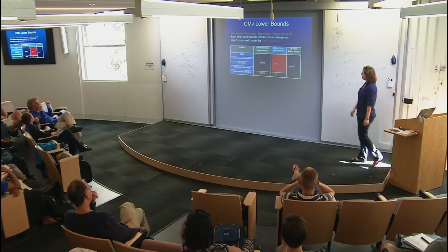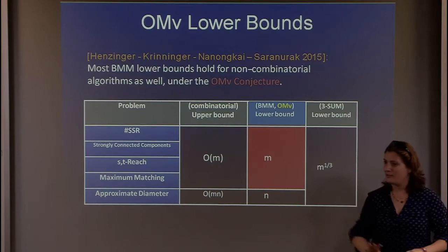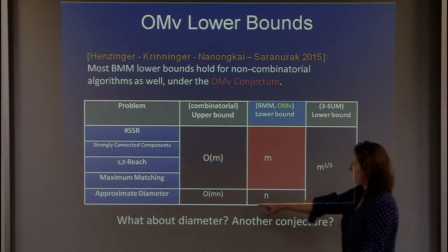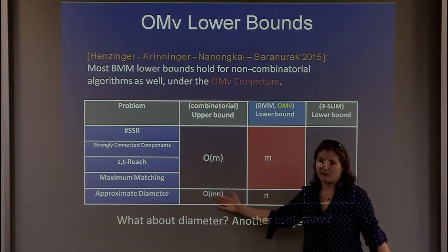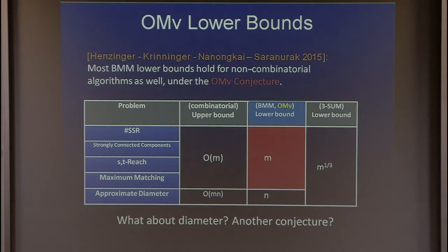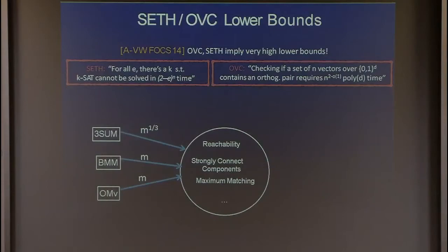With the OMV conjecture, we can add it to many of these problems and get M-times-N lower bounds. But what about this bizarre case for approximating the diameter, where the best algorithm just recomputes all-pairs shortest paths from scratch, and we only get a linear omega-of-N lower bound? Maybe a completely different conjecture explains this.